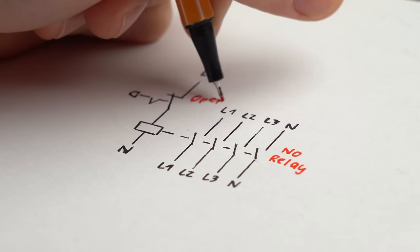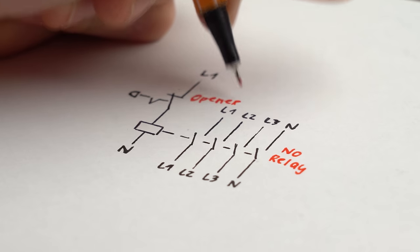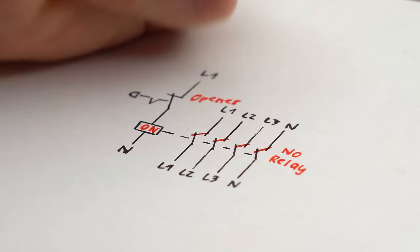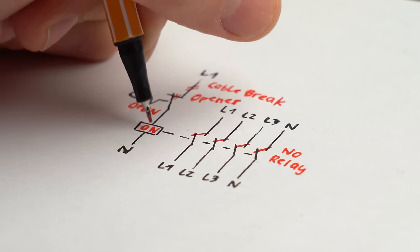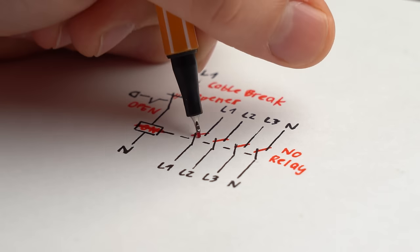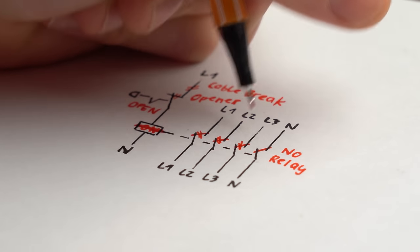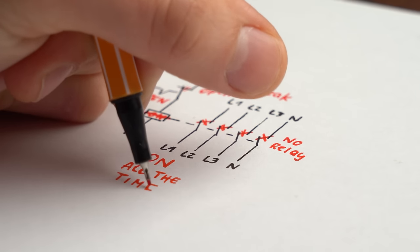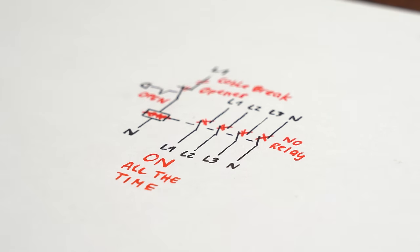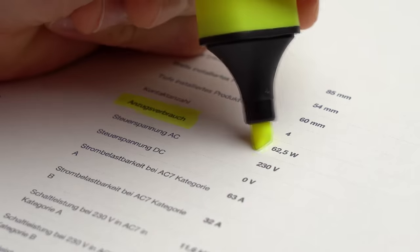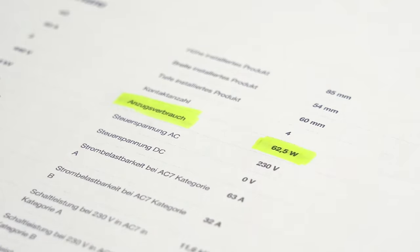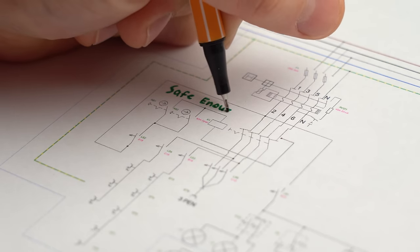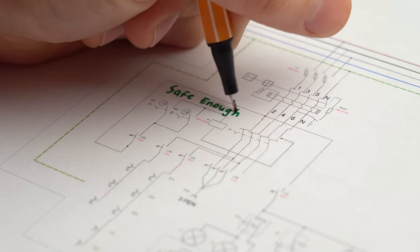That is why you usually use a normally open relay and an opener to make such a system. Because there, the relay is always turned on, and if either a cable break happens or the opener gets pushed, the relay turns off. The only problem with that is that since the relay will always be turned on during normal operation, it would draw 63W of power continuously, and that is something I didn't want. And thus, instead, I use the halfway safe version.